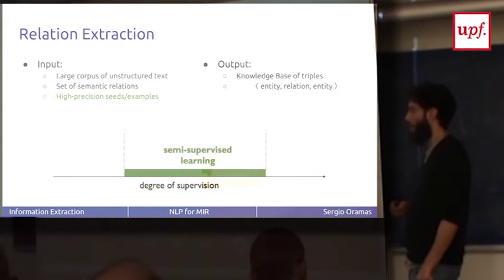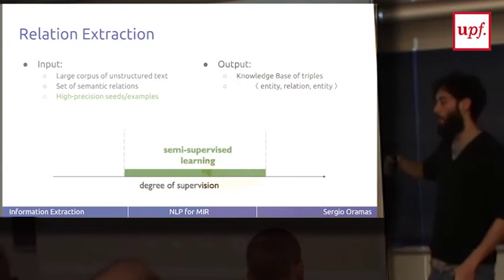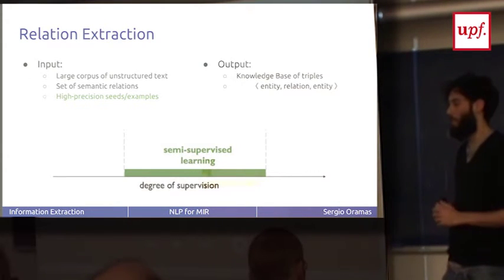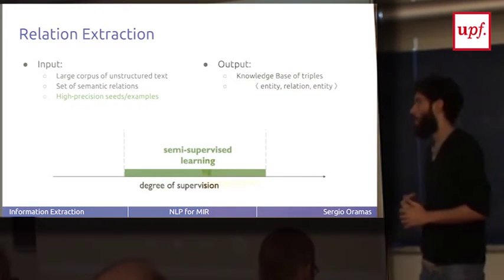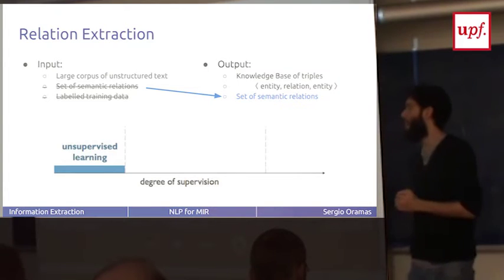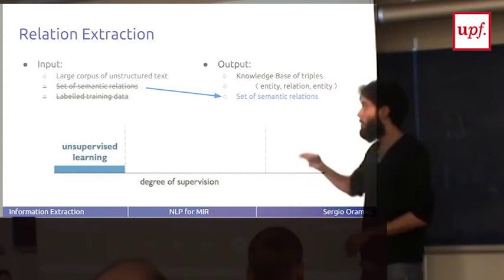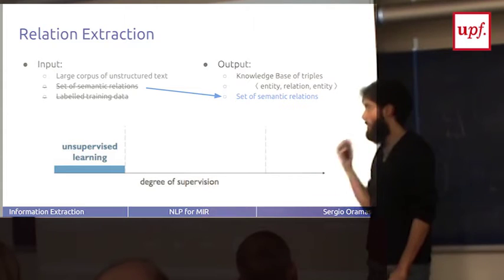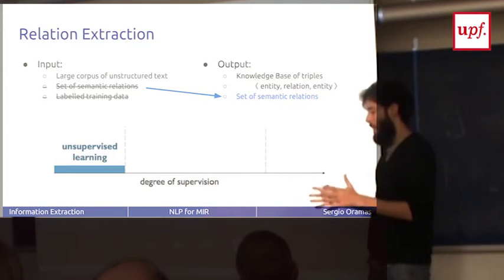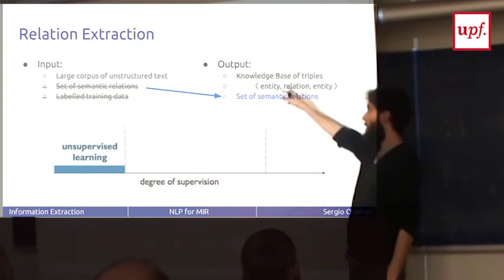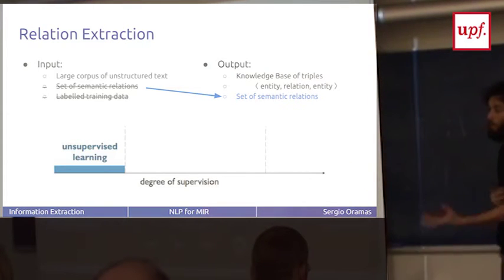There appear other approaches like the semi-supervised learning approach. Instead of having a big corpus of annotated data, you have some seeds, some high precision seeds. You train with that, you get some results, and you bootstrap your system using that output to continue the training. This is the semi-supervised approach. Then there is the unsupervised approach. You don't need anything annotated and you don't even need a set of semantic relations you want to extract. You just give a set of documents and the system extracts all the possible relations that there are. The output is the knowledge base and also the semantic relations when not defined a priori.